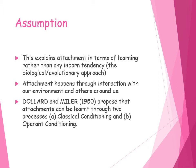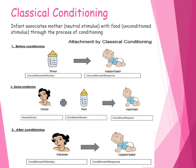Dollard and Miller proposed that attachment happens through classical and operant conditioning. We learn to form an association with our attachment figure and are reinforced in forming an attachment to our primary caregiver. In classical conditioning, an infant associates their mother — the neutral stimulus — with food, the unconditioned stimulus. Before conditioning, the mother is a neutral stimulus producing no response, while food is an unconditioned stimulus that produces the unconditioned response of happiness and pleasure.